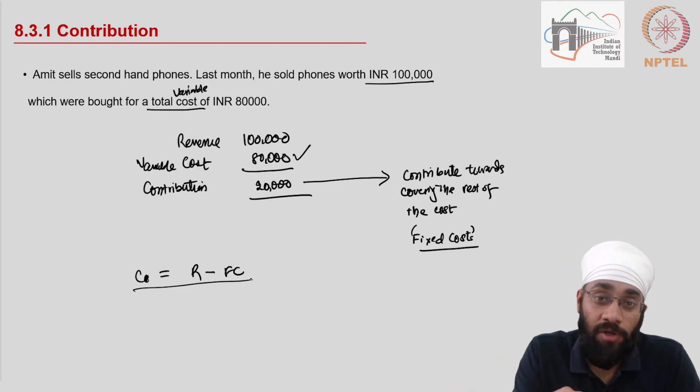The variable costs vary with the business. If you are covering the variable costs, you are good to go, you should operate the business. And if you are not able to cover the variable cost, then you should not operate in the business. So the variable cost is something that you must cover in order to survive in the business, in order to start any business, leave alone survive.